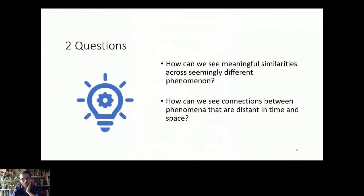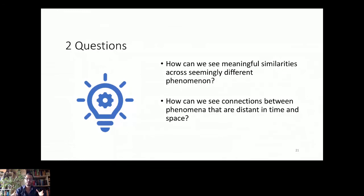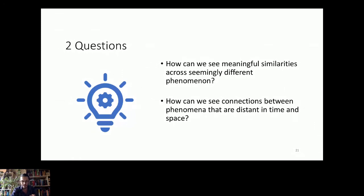Two questions for designers: how can we see meaningful similarities across seemingly different phenomena? How can we see connections between phenomena that are distant in time and space? Especially now with COVID-19, we see there are no real boundaries — the concept of national borders is theoretical, because if there were true boundaries, we wouldn't worry about a pandemic starting in one country. The same applies to science and learning: there are no boundaries. The fact that you put a course in a silo — this is marketing, this is finance, this is project management — is wrong. The boundaries between courses and disciplines need to disappear to enable transformative learning.